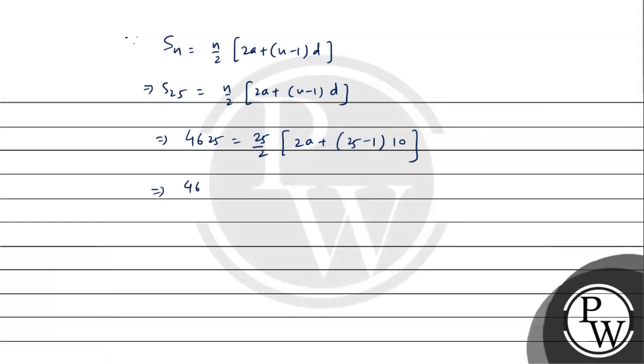Further proceeding, (4,625 × 2) ÷ 25 = 2a + 240. Now, dividing 4,625 by 25: 25 into 1 is 25, remainder is 21, then 212, 25 into 8 is 200.